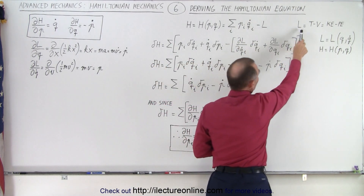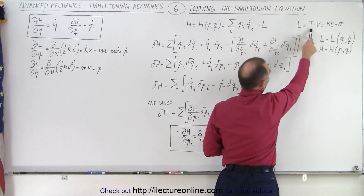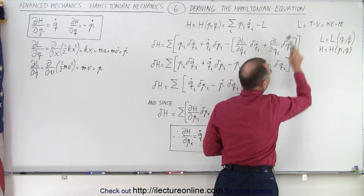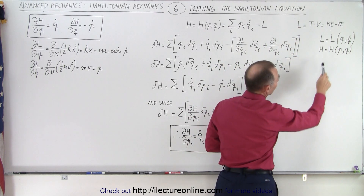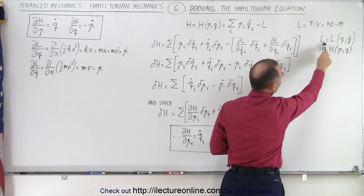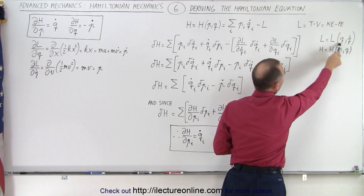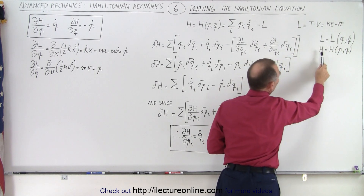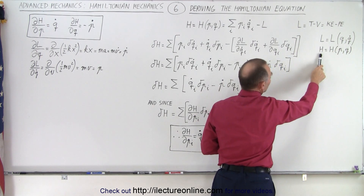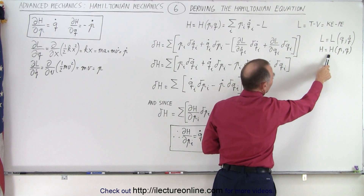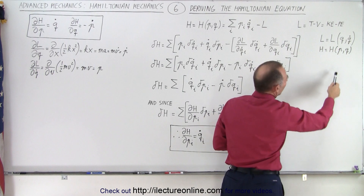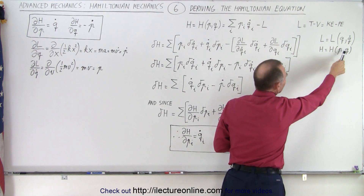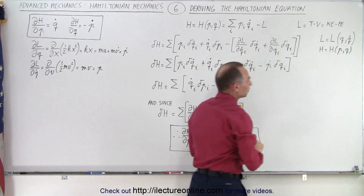Remember that the Lagrangian is equal to the difference between the kinetic and the potential energy, and also realize that the Lagrangian is a function of q and q-dot, whereas the Hamiltonian is a function of p and q.